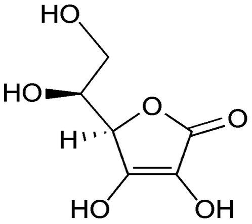In basic media, OH⁻ ions and water are added to half-reactions to balance the overall reaction. For example, in the reaction between potassium permanganate and sodium sulfite, balancing the number of electrons in the two half-cell reactions and adding them together gives the balanced equation: 2KMnO₄ + 3Na₂SO₃ + H₂O → 2MnO₂ + 3Na₂SO₄ + 2KOH.